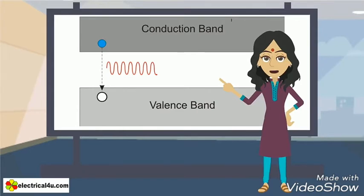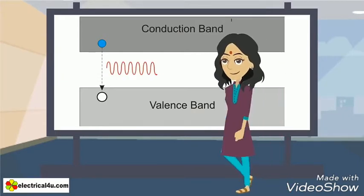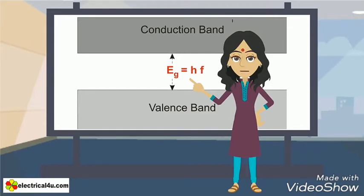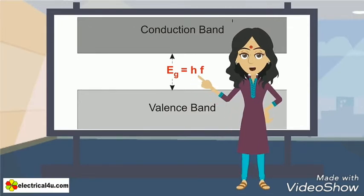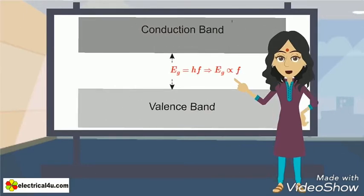This energy is equal to the forbidden energy gap between conduction band and valence band. Here it is to be noted that conduction band is at higher energy level than valence band. We know that the energy of a photon is nothing but the product of frequency of electromagnetic radiation and Planck constant. Now consider the energy gap is EG. Hence, EG equals HF where H is Planck constant and F is the frequency of electromagnetic radiation. Now it can be said that EG is proportional to F. This is what we do in light emitting diode.